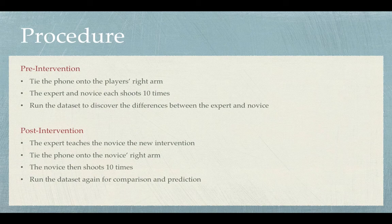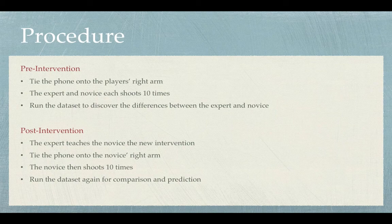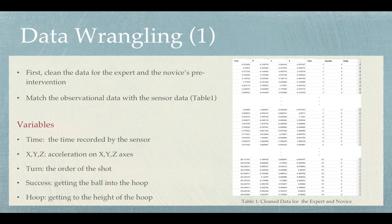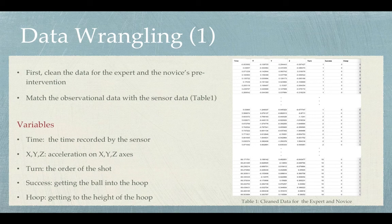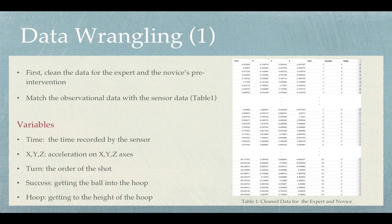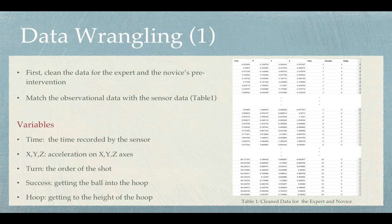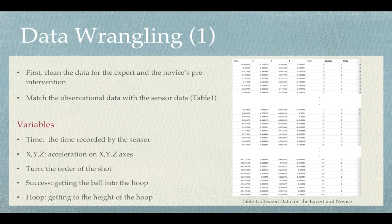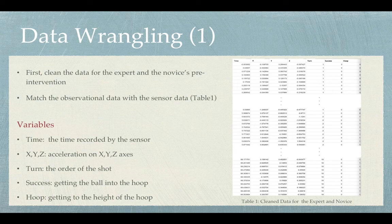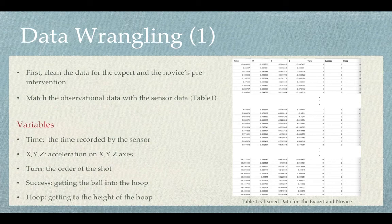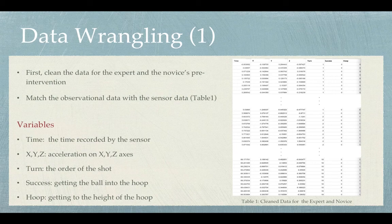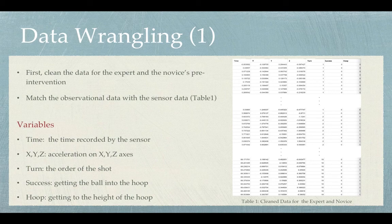The first step we will take is to clean and wrangle the data. On the observed data, we have recorded the start time and end time of each shot and the result of the shot. We will use the time in the observed data as a cue to match with the data from the sensor. The clean data set we produced will look like this picture. There will be a table containing seven variables, which is the time recorded by the sensor, the acceleration in x, y, z axes at each time point, the order of the shot, whether it is successful, and whether it gets to the height of the hoop.